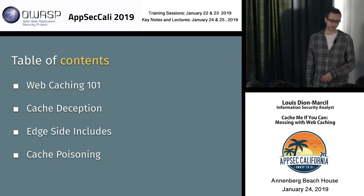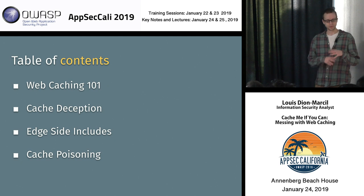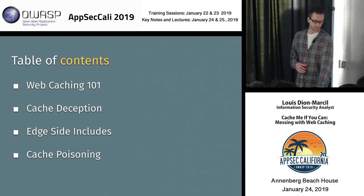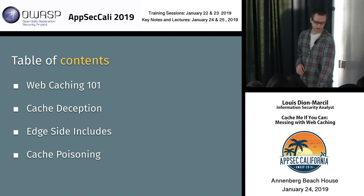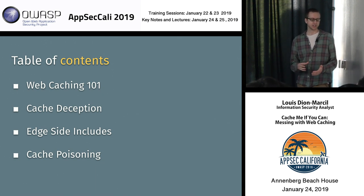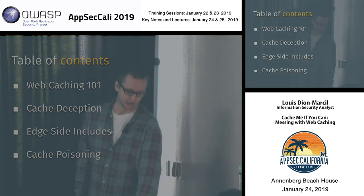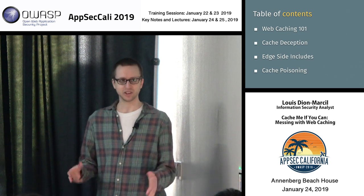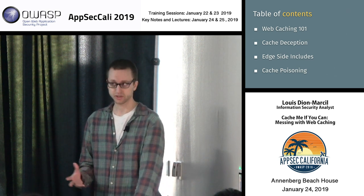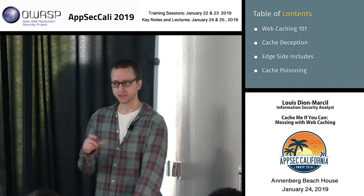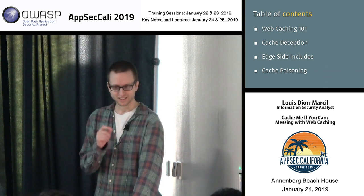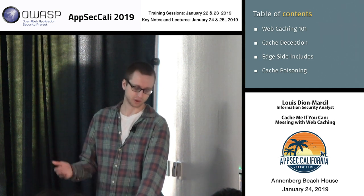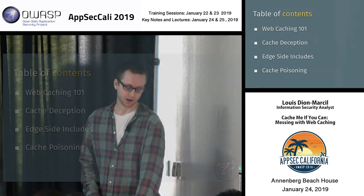The table of contents covers a short web caching 101 so we're on the same page, then three attack methods: web cache deception, edge side include injection, and cache poisoning. Whether you're on the red team, blue team, or just a developer, hopefully you can get something out of this — even if it just helps you detect a weird thing in your web app that you might find a way to exploit.